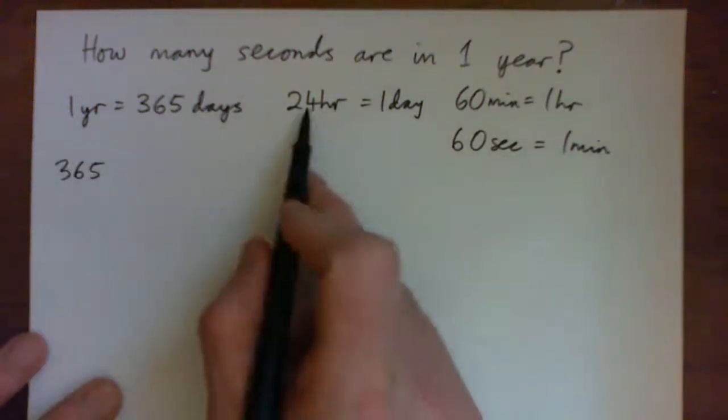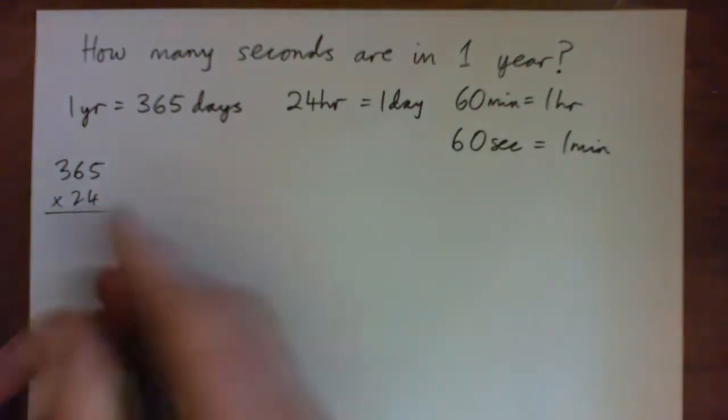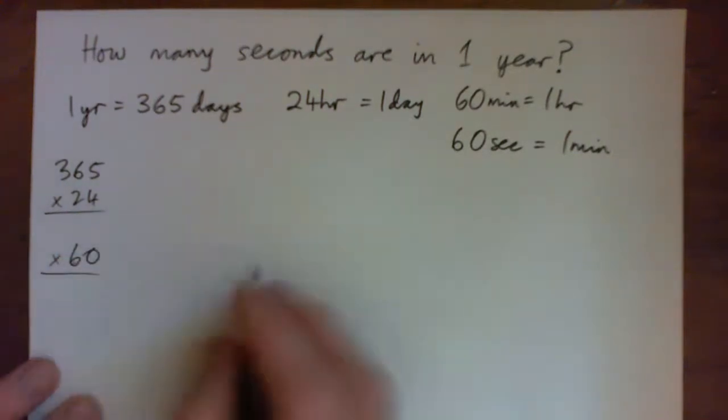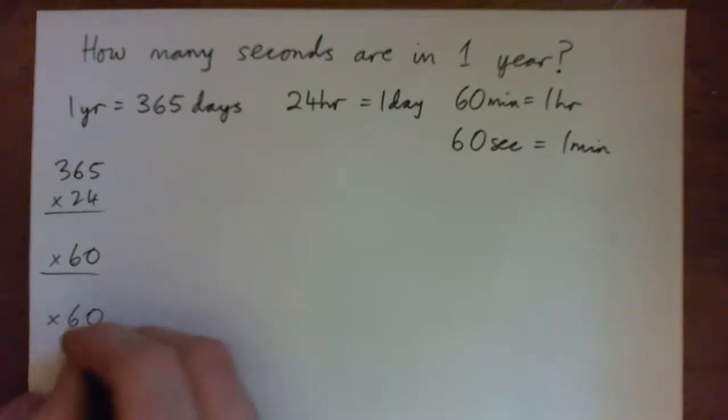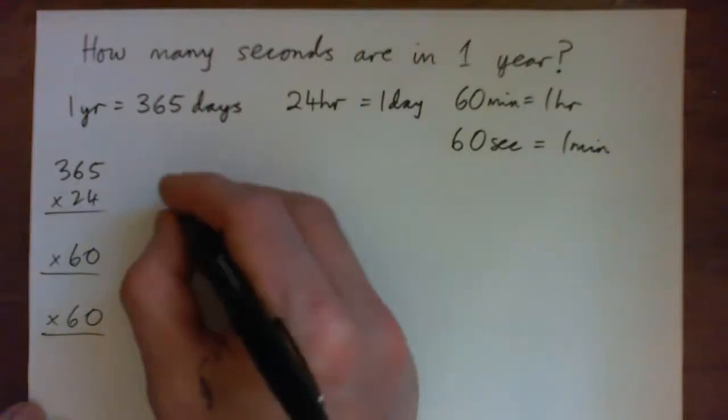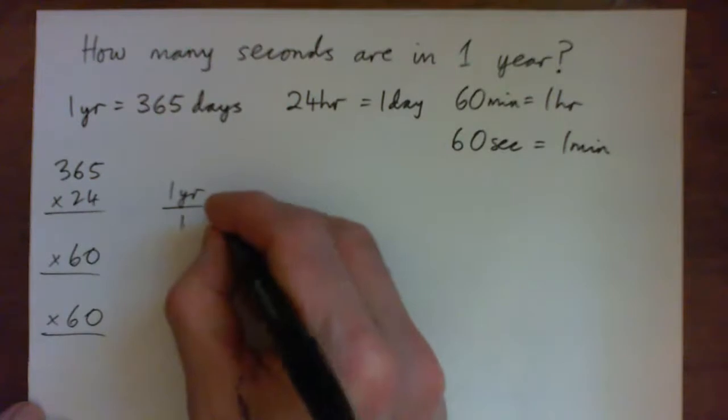Then there's 24 hours in a day so multiply by 24, 60 minutes in an hour so multiply by 60, and 60 seconds in a minute so multiply by 60. Just by multiplying you'll get the answer. I want to do the unit analysis for practice because it pops up in chemistry and lots of other places.